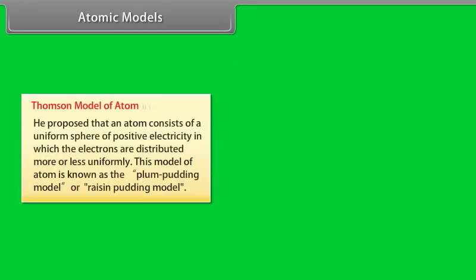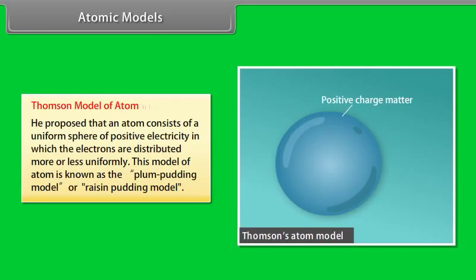Thomson's model of atom: He proposed that an atom consists of a uniform sphere of positive electricity in which electrons are distributed more or less uniformly. This model is known as the plum pudding model or raisin pudding model.